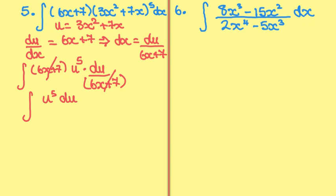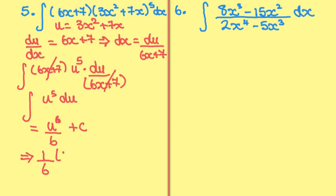That's easy to integrate — it's equal to u to the power of 6 over 6 plus c. I know what u is, so therefore my final answer is one sixth times (3x squared plus 7x) to the power of 6 plus c.